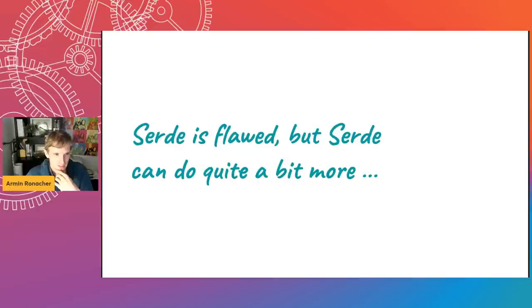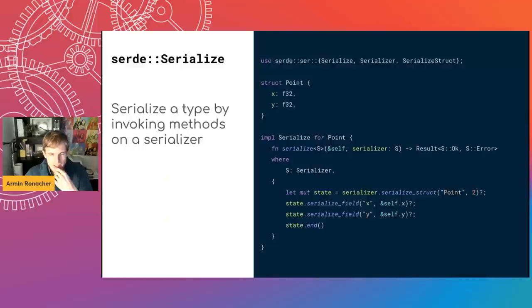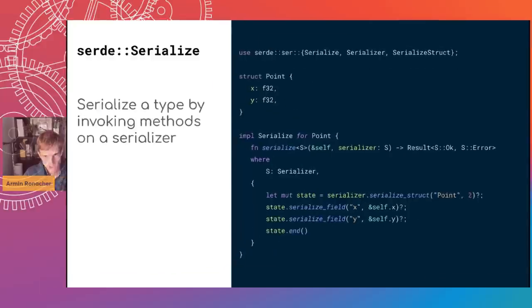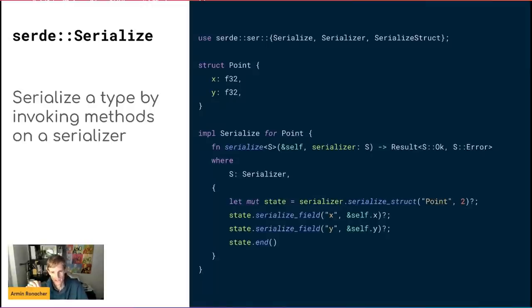Before going into ways you can abuse Serde, let me quickly explain how it works if you haven't used it yet. There are two important traits. The first is called Serialize — this trait defines how a type wants to be serialized. The second is called Serializer, which is implemented by something that knows how to serialize a serialized object. For instance, a Serializer would say 'I know how to write JSON, I know how to write YAML,' whereas Serialize says 'I know how to instruct the Serializer to serialize myself.'